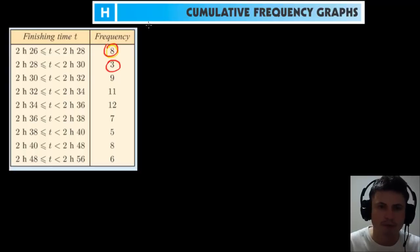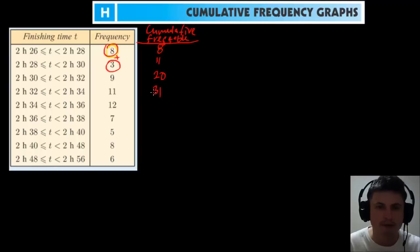So now what we're going to do is what we did before. We're going to construct a cumulative frequency table, which will help us figure all of this out. So cumulative frequency table is going to be like this. So first number here is eight. The next number is going to be eight plus three, which is 11. The next number after this is 11 plus nine, so it's 20. Then it's going to be 31, then 43, 50, 55, 63, and 69.